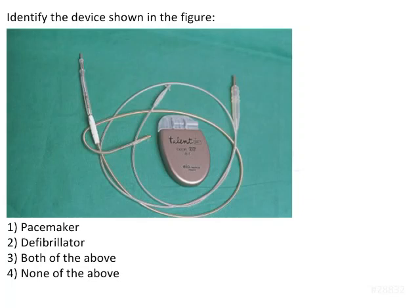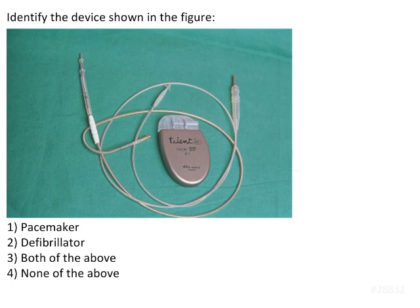The question here is to identify the device shown in the figure. It's a very straightforward question. The options are either a pacemaker or a defibrillator. Both of these are electronic devices that pass electronic current, which is used to either stimulate the heart in order to start beating, or to decrease the number of heartbeats per minute as the contraction and relaxation of the heart is regulated.